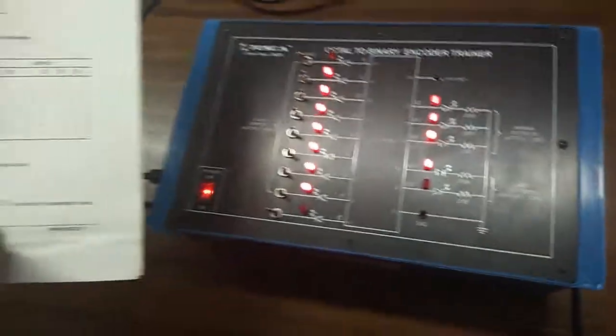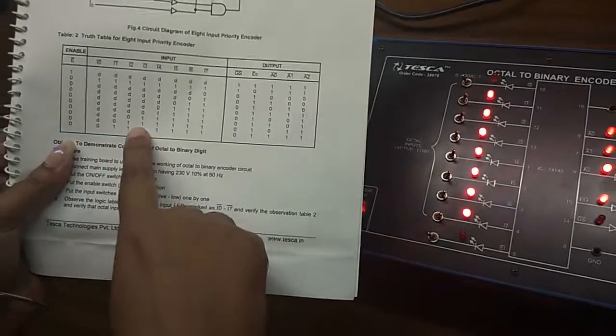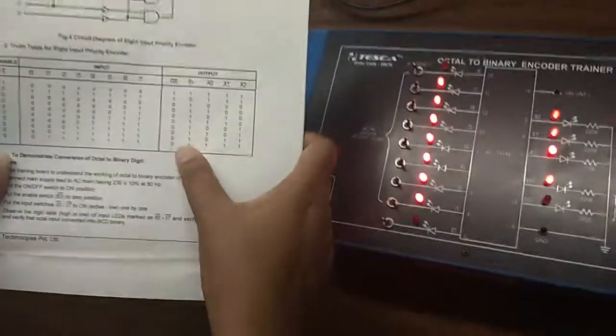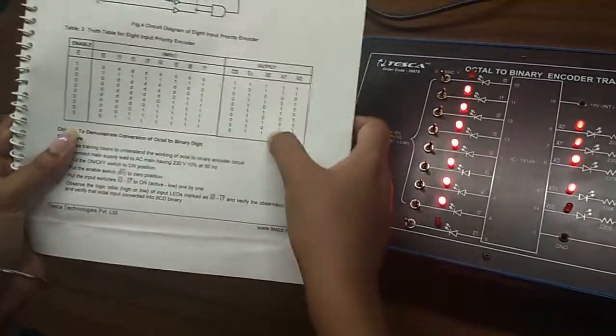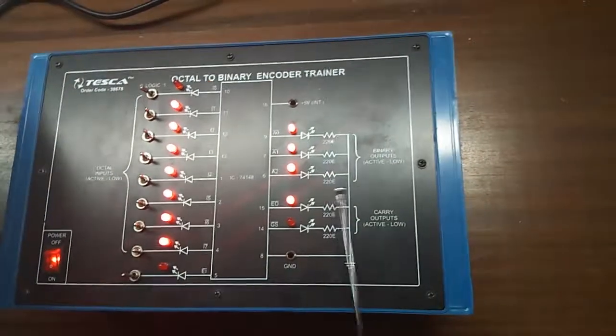This is the last one where I7, I6, I5, I4, I3, I2, and I1 is 1 and I0 is 0 and the output is E0, A0, A1, A2 is 1 and GS is 0. Here GS is 0 and rest of them is 1.